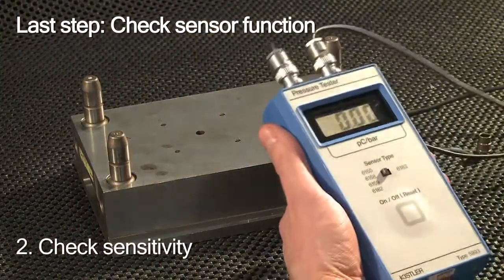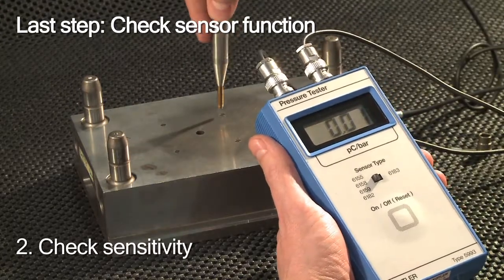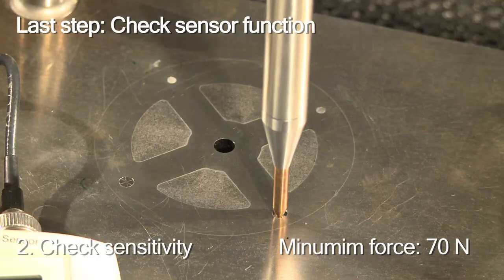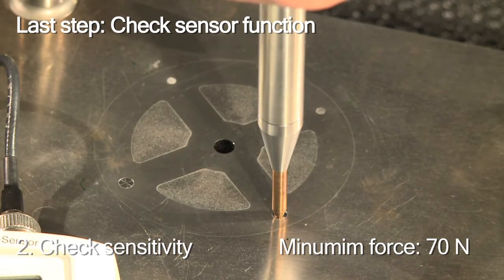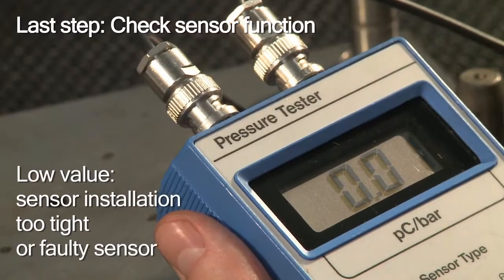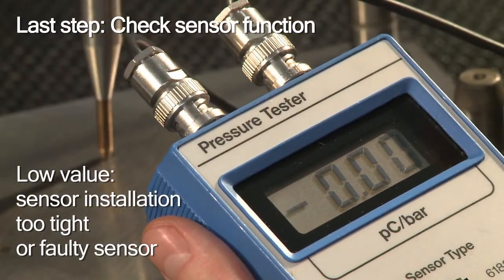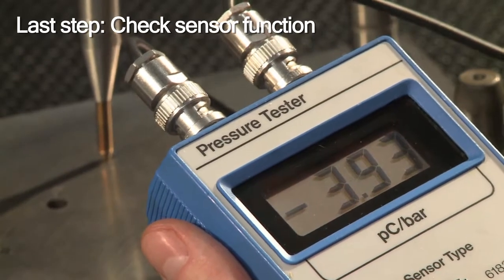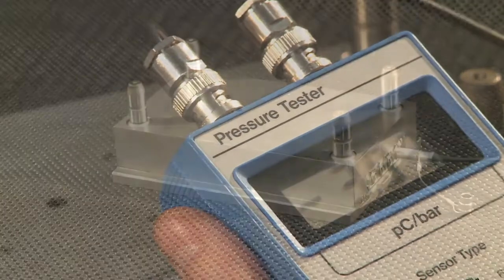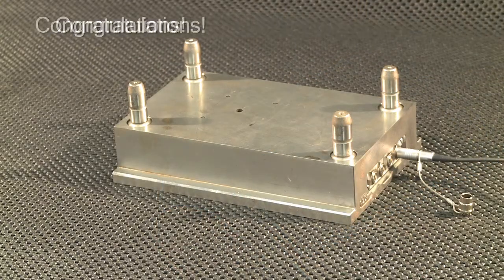Finally, you check the sensor's sensitivity. If the indicated value is too low, the sensor is either installed too tightly or it's faulty. If it consistently stays within the recommended range, everything is fine. Congratulations.